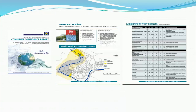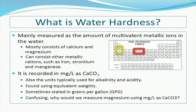Water quality reports are generally available online and include information about the source of your drinking water, as well as the quality of the water as it reaches your home. Now that we have seen the effects of water hardness firsthand, water hardness is defined as the relative concentration of multivalent metallic ions in water. Calcium and magnesium ions account for a large percentage of water hardness, so we are usually more concerned with them.